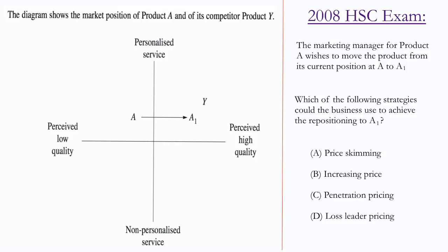By moving the product from A to A1, personalized service or non-personalized service is not increasing or decreasing at all, so we can rule those two out. That might sound a little confusing, but when moving from A to A1, the arrow is horizontal, meaning it only affects the scale for perceived low quality or perceived high quality. If the arrow was moving vertically up or vertically down, then it would influence personalized or non-personalized service, but in this case it's not.